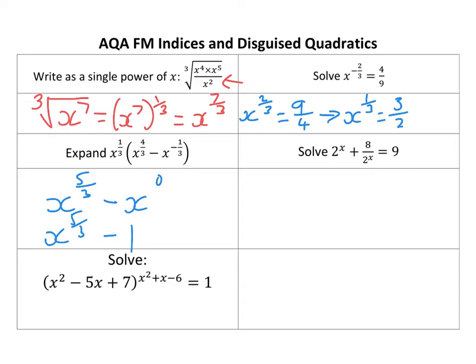It's going to be 3 over 2. And then I'm going to cube to get rid of that. So I get x equals — cube that — 27 over 8. And you could have done the cubing first and then the square rooting, but I think that's a little bit harder personally.